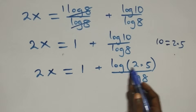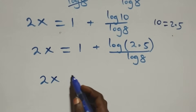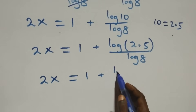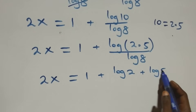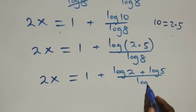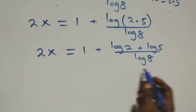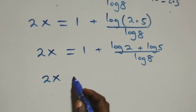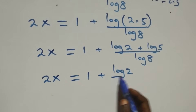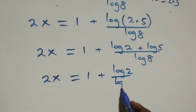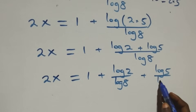Applying log of a times b rule, log 10 over log 8 gives 1, and we also expand using log 2 plus log 5. So what we have becomes 2x equals 1 plus log 2 plus log 5 over log 8. Separating into two fractions: 2x equals 1 plus log 2 over log 8 plus log 5 over log 8.